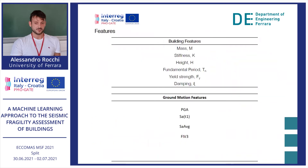Here you have the features of the dataset. As you can see, they can be divided into building features and ground motion features. For the building ones, we have the mass, the stiffness, the height, the period, etc. For the ground motion ones, we have the PGA, SA at T1, SA average, and FIV3.